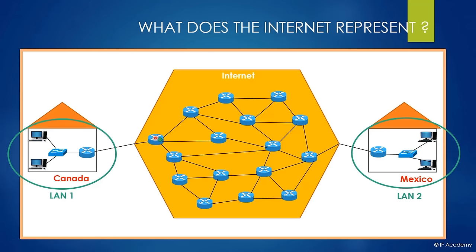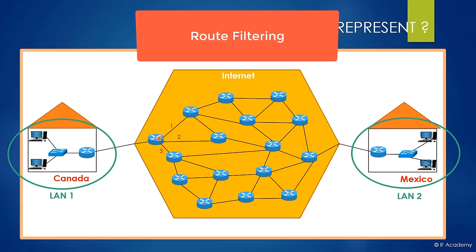Each router has a special processor, and the information in the routing table is created by this processor using many different algorithms. These algorithms determine the path a packet must go, and the results are added to the routing table. When a router makes this decision, it always ignores the path that the packet came from, because it makes no sense to forward the packet back the way it came.